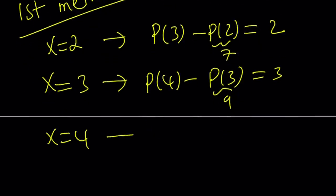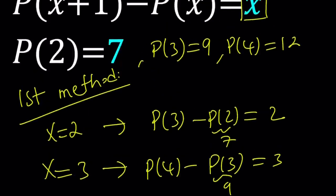So bear with me. X equals 4 gives you P of 5 minus P of 4 equals 4. You know that P of 4 is equal to 12. So P of 5 must be 16. Let's go ahead and write that down as well.